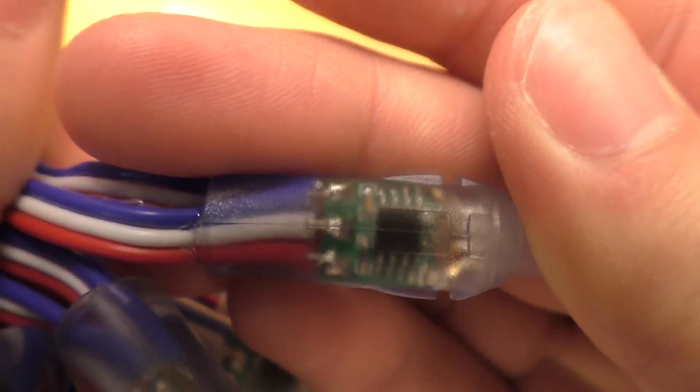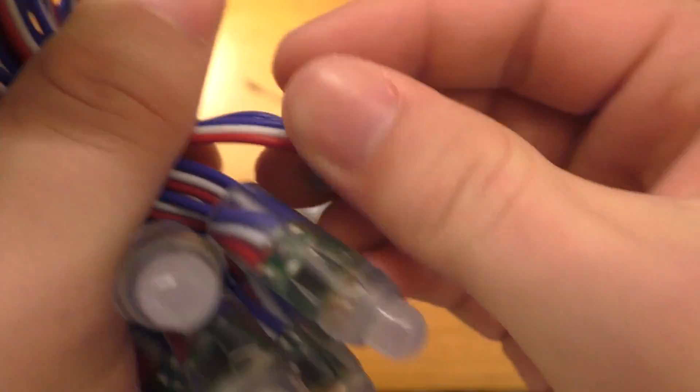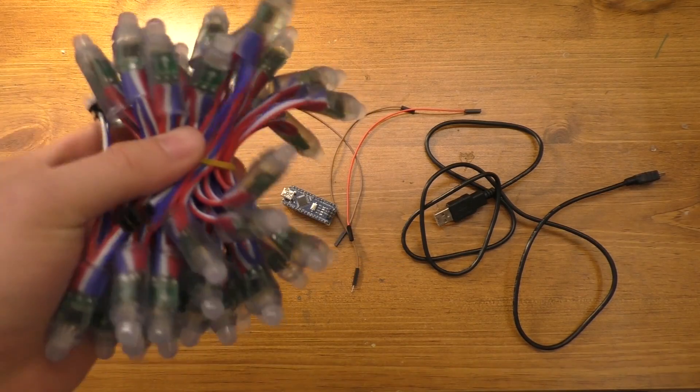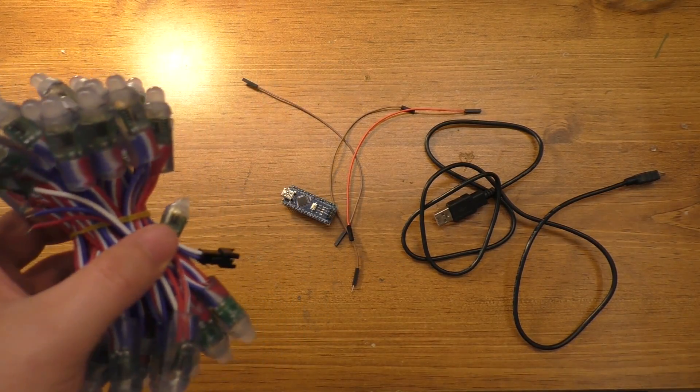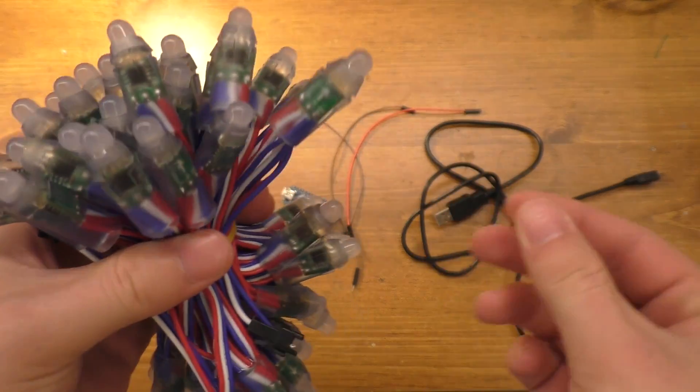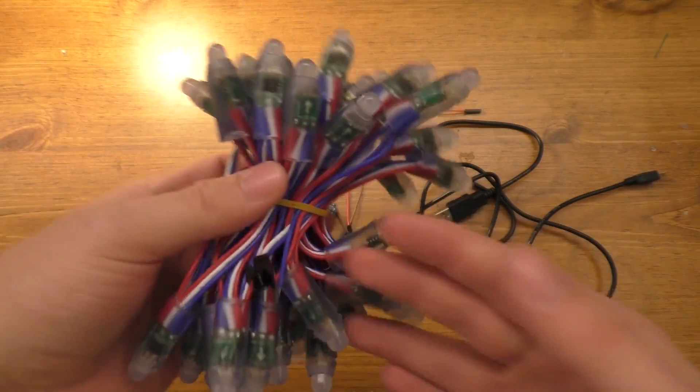You can actually see the chip in the clear heat shrink type thing right there. This strip came from Amazon, it's about $17 I think. There's 50 of them on here. These are 12 millimeter LEDs and I think the strip they claim is about 4 meters long.